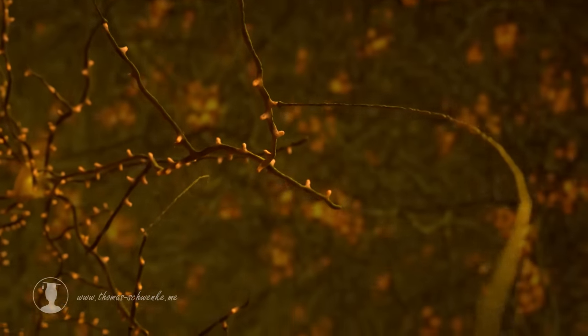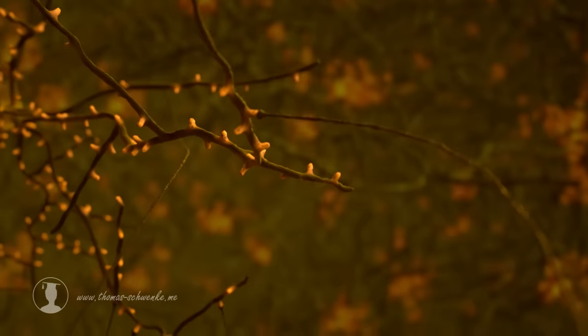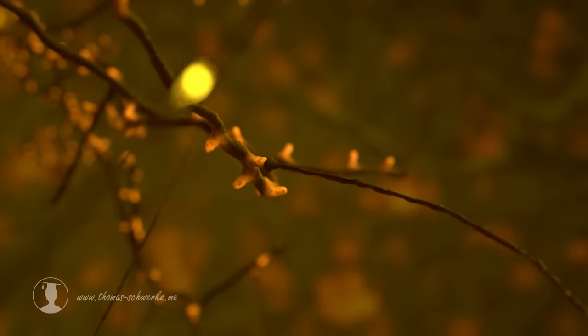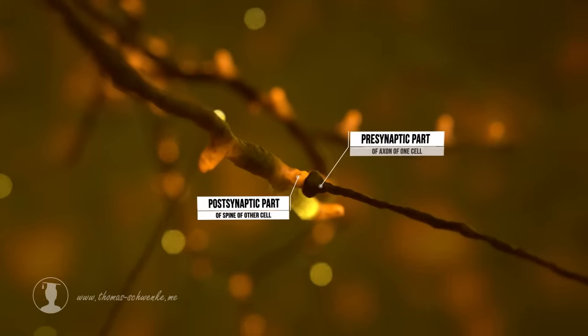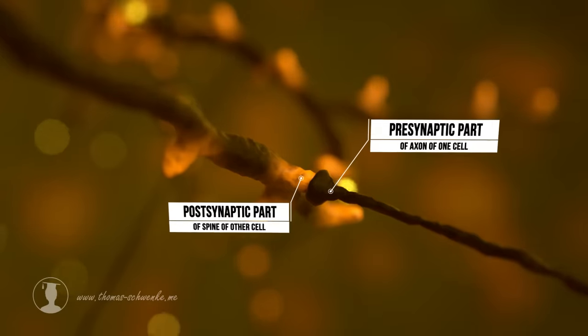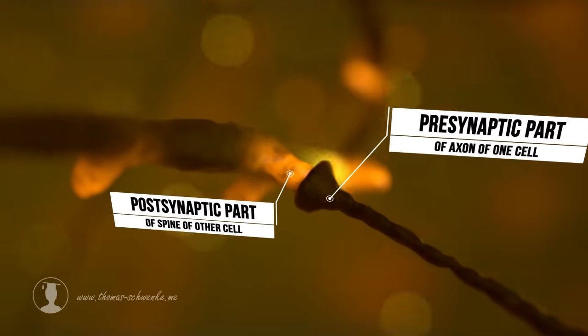The two nerve cells use a synapse to transmit an electrical signal. A synapse consists of a presynaptic part, a postsynaptic part, and a small gap between the two.